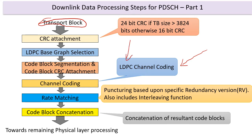Low density parity check codes have been used in many areas, most prominently in the Wi-Fi area for the last two generations. Now it finds itself into the 3GPP space, especially for eMBB and whatever has been standardized on the URLLC front. For the corresponding control channels, we have what is called polar codes, which are again new. We used to use convolutional codes in LTE — that is one difference to keep in mind.